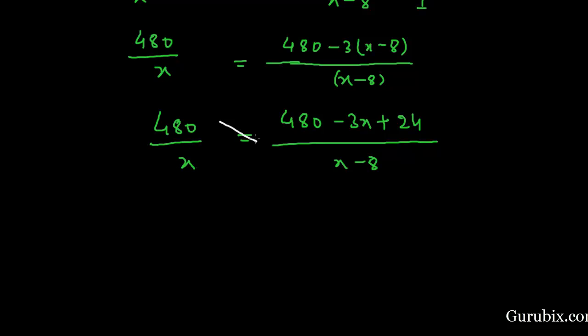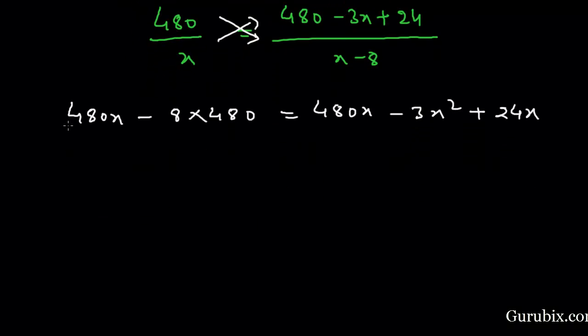Now we shall cross multiply this equation. Then we have 480x minus 8 times 480 equals 480x minus 3x squared plus 24x. Finally, we have 3x squared minus 24x minus 8 times 480 equals 0.